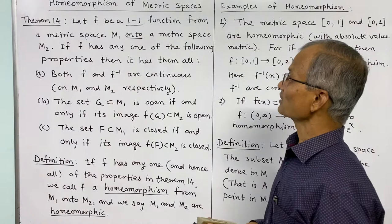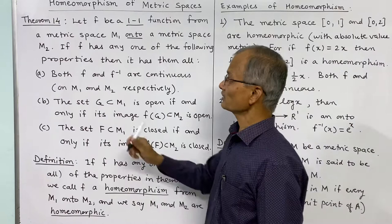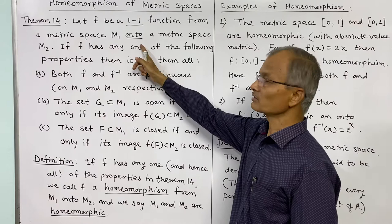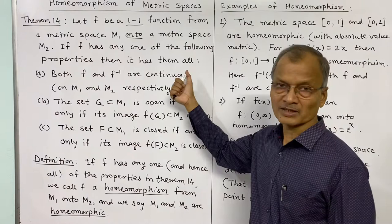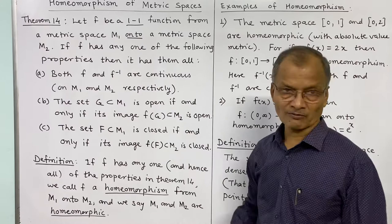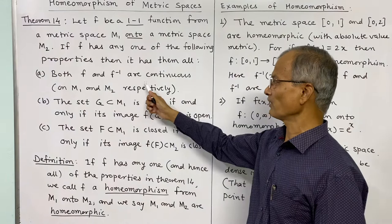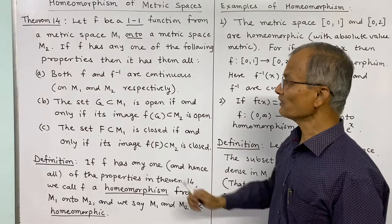The topic we want to study is homeomorphism of metric spaces. This is Theorem 14. The theorem states: let f be a one-to-one function from a metric space M1 onto a metric space M2. If f has any one of the following properties, then it has them all — meaning all three properties are equivalent.